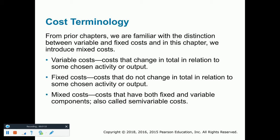The first is called a variable cost. A variable cost per unit will always remain the same within the relevant range. However, the total variable costs will increase or decrease based on increases or decreases in total production. Fixed costs, on the other hand, will always remain the same in total, but they will change per unit based on changes in activity. As activity increases, the cost per unit will decrease, and vice versa.